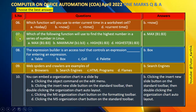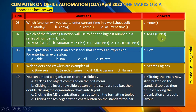Question number 7: Which of the following functions will you use to find the highest number in a series of numbers? Options: A. MAX(B1:B3), B. MAXIMUM(B1:B3), C. HIGH(B1:B3), D. HIGHEST(B1:B3). The right answer is A — MAX(B1:B3).